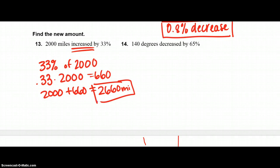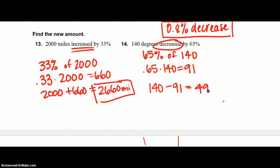Same thing on number 14, you have to find 65% of 140, 0.65 times 140, and that is equal to 91. Now this is decreased, so you take 140, and you subtract 91, and you get 49, and this is degrees, so I'm just going to put a degree symbol.